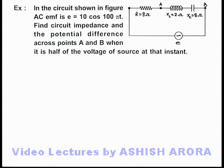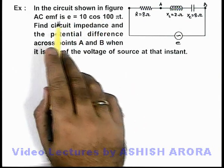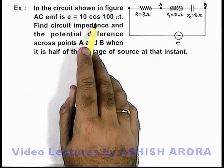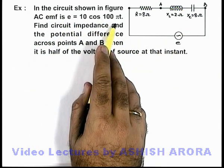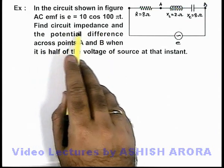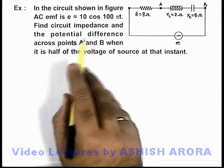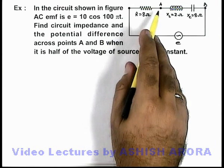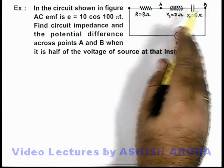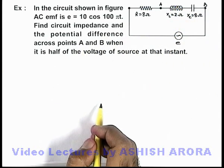In this example, we are given that in the circuit shown in the figure, the AC EMF is 10cos(100πt). We are required to find the circuit impedance and the potential difference across points A and B when this is half of the voltage of the source at that instant.